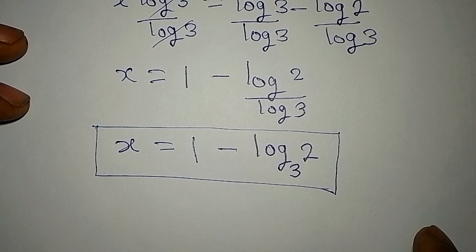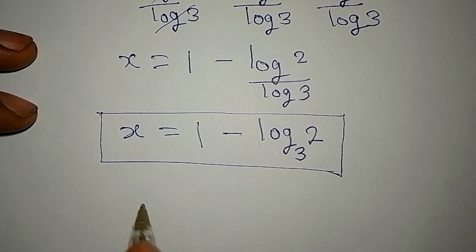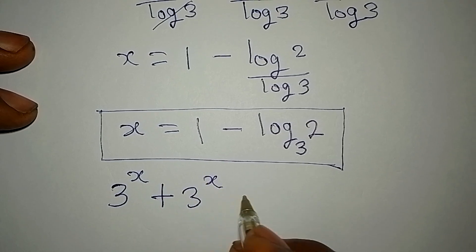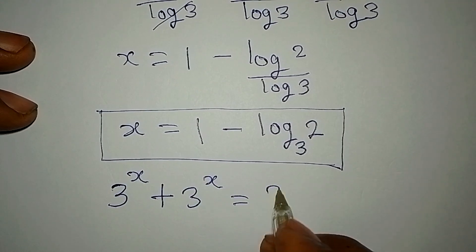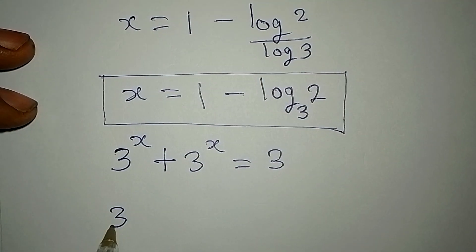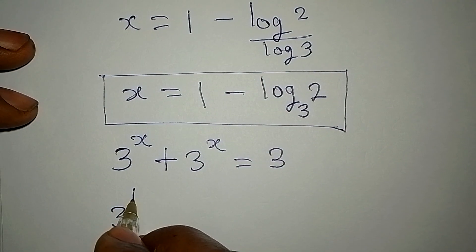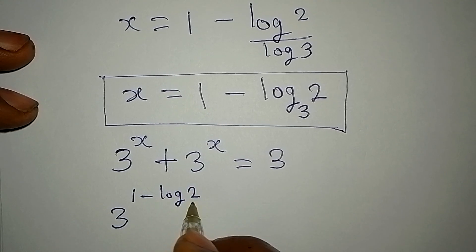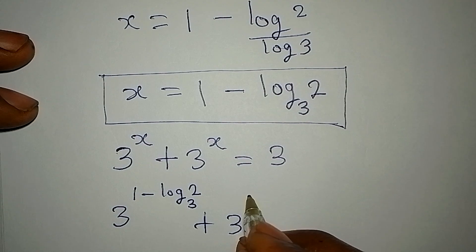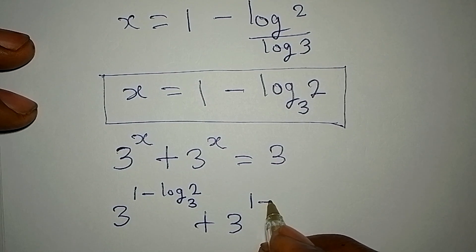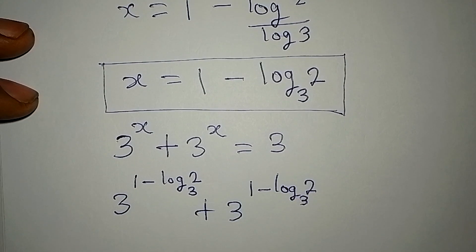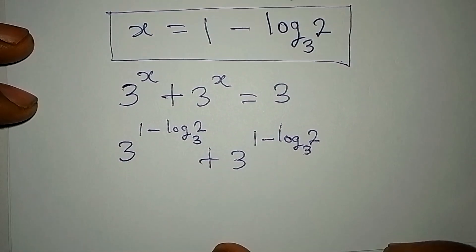Okay, so we can equally confirm this. Let's confirm what we have. We got 3 to the power of x plus 3 to the power of x equals 3. Now in place of x I'm writing the whole expression, so we have 3 to the power of 1 minus log 2 to base 3, then plus 3 again to the power of 1 minus log 2 to base 3.